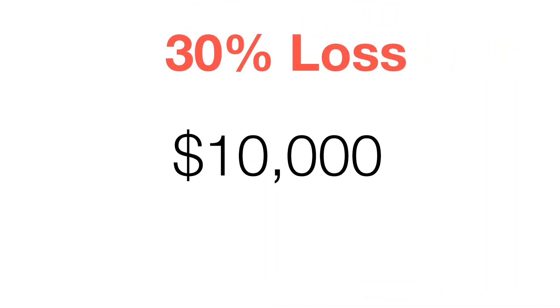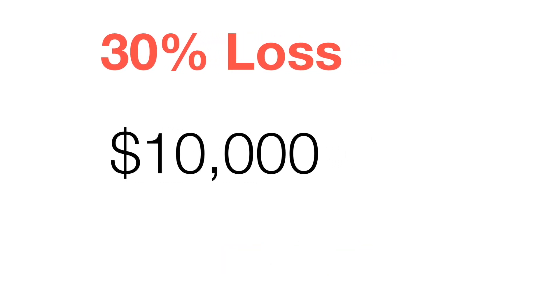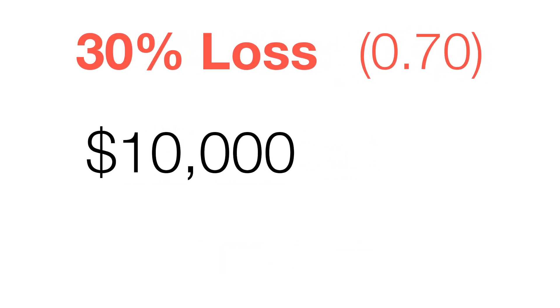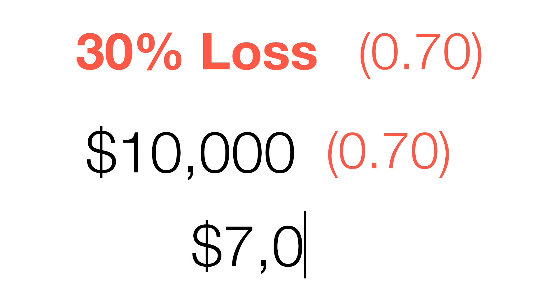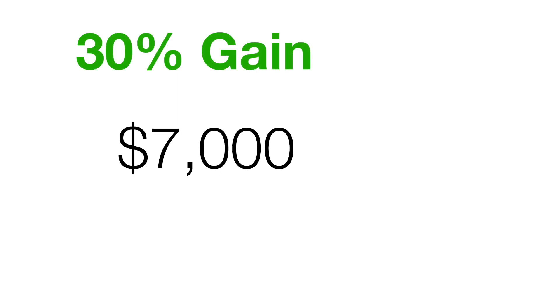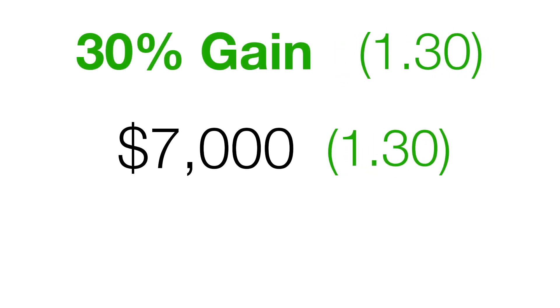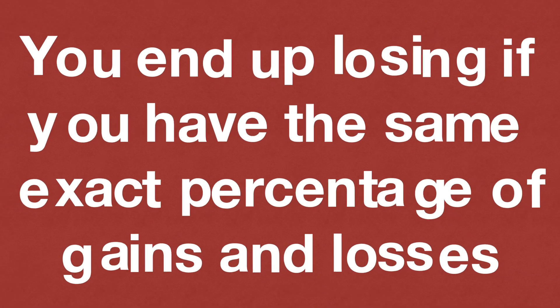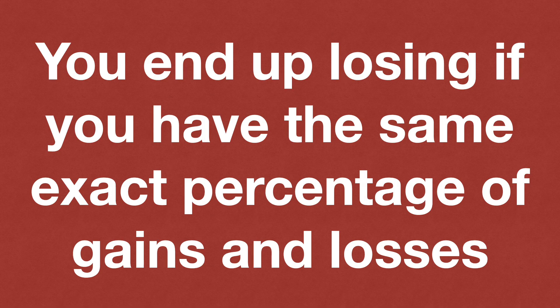Let's do the reverse: $10,000 with a 30% loss followed by a 30% gain. A 30% loss gives a multiplier of 0.70, so $10,000 × 0.70 = $7,000. Then a 30% gain: $7,000 × 1.30 = $9,100. You end up at the same $9,100 — losing money either way. So if you get 10% gain and then lose 10%, you actually have less than you started with. Big losses outweigh big gains.